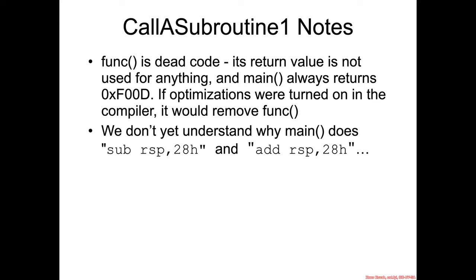So a couple of notes about that call a subroutine one. The first is that obviously func is basically dead code. It returns a value that is never used. And practically speaking, if you had any sort of optimizations on, the compiler would know that this thing only ever returns hex food. And it would just optimize it all out and throw it away. But that's specifically why we turn off some of the compiler optimizations so that we can show you simple assembly for simple C code.